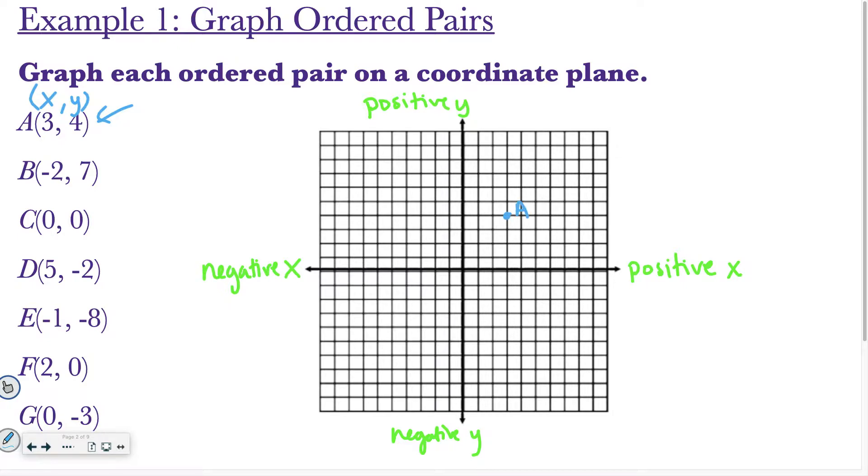Then, for B, I would go negative 2 in the x direction, so left 2, and then I'm going to go up 7, and that would be point B. C is at (0, 0), so that's right where the two axes, so that's the plural for axis, is axes. So, that's where C would be, and then D, I would go positive 5, and then negative 2, so that means I'm going to go down 2. All right, so I've done A, B, C, and D.